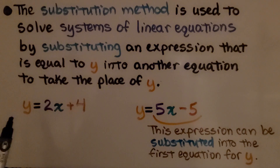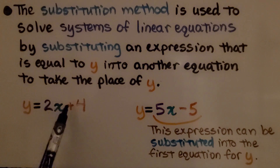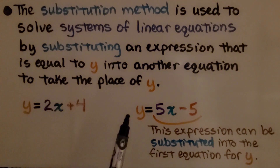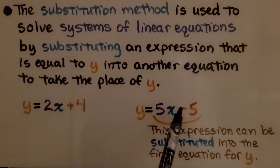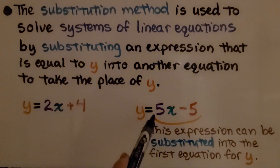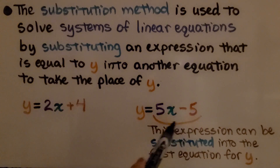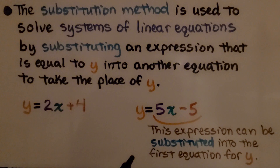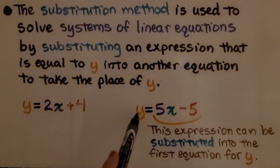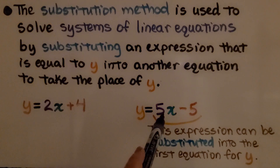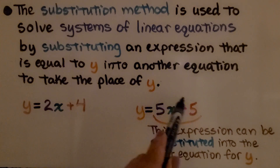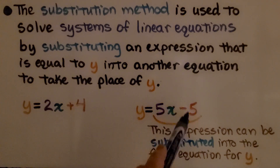If we have a system of equations of y equals 2x plus 4 and y equals 5x minus 5, we take this expression 5x minus 5 and substitute it into the other equation for y. Since it says y is equal to this, we're going to use this part of the equation for y.